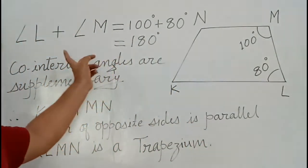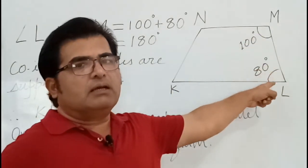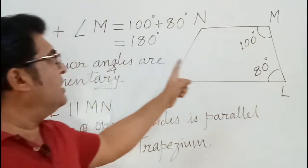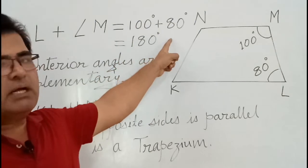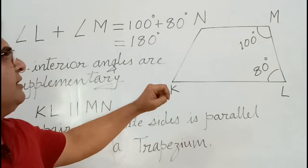In this figure, first we take angle L plus angle M. Angle L plus angle M, that is equal to 100 plus 80, equals 180 degrees. We got 180 degrees.